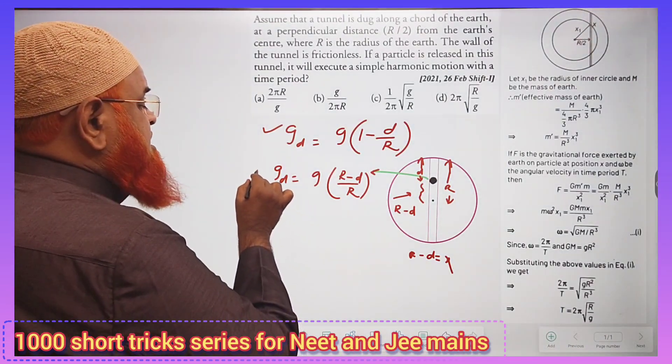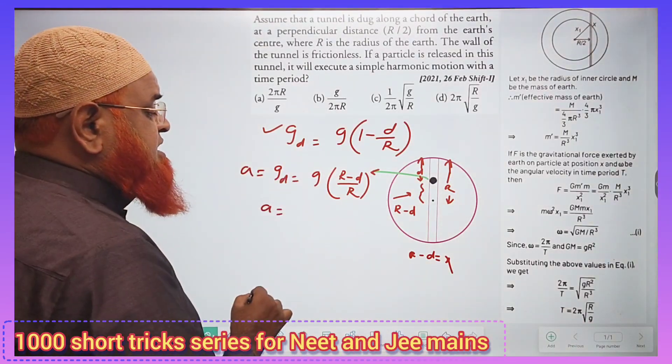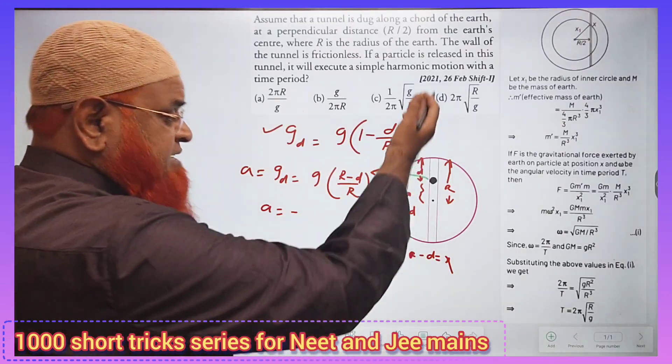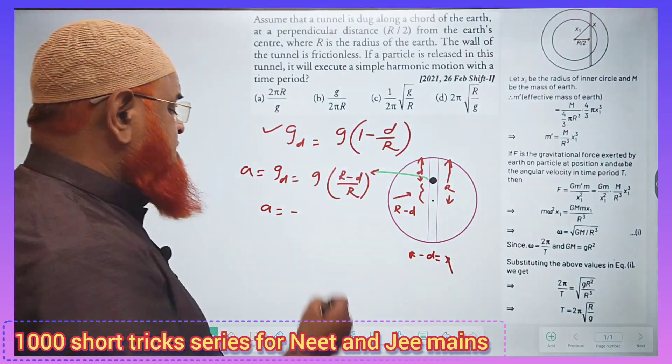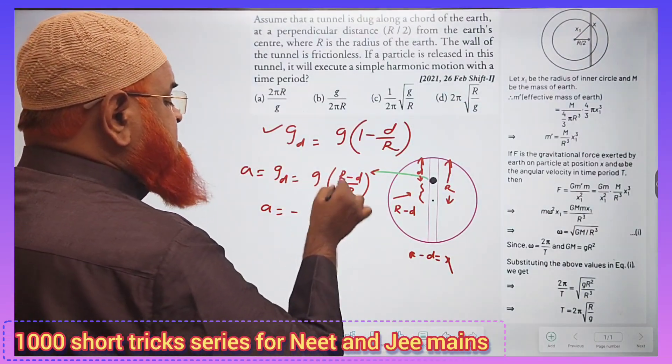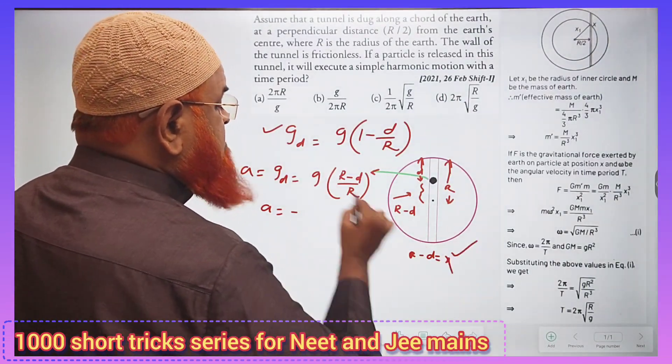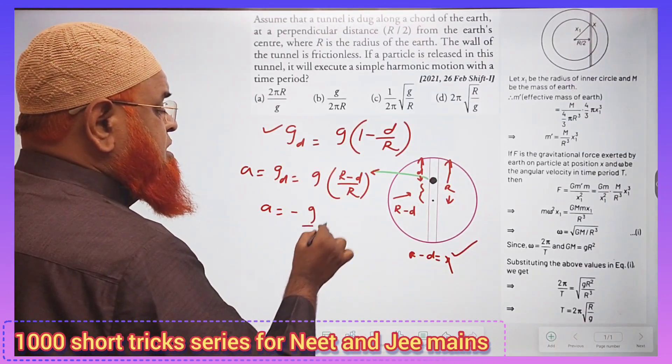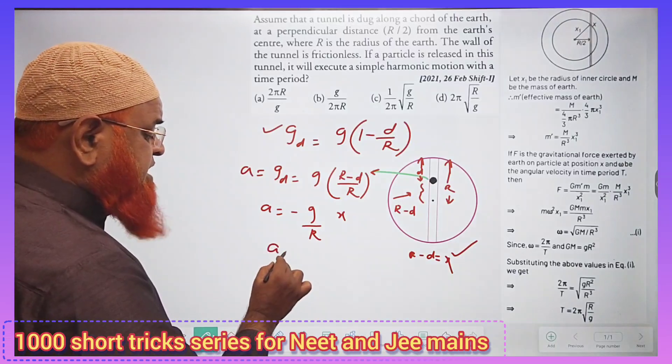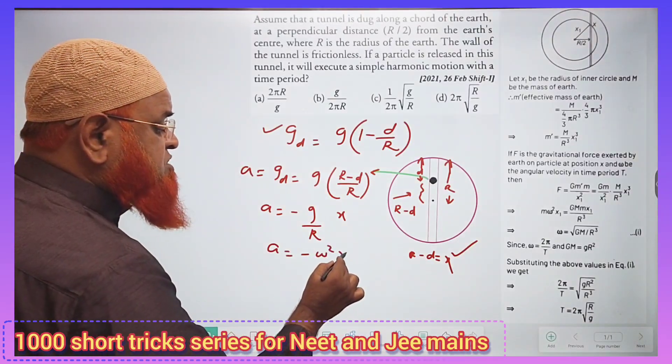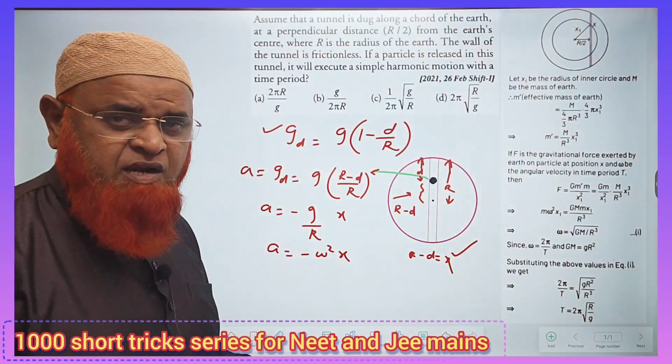For acceleration, instead of g_D, we can take acceleration which will always be opposite to the direction of displacement. R minus D can be considered as x, so we get (g/R) times x. You can compare this acceleration with minus omega squared x, which is the general formula for acceleration.